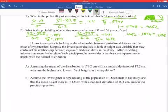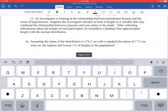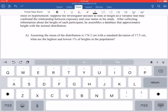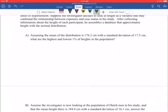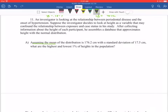This next part, I'm just going to do part A because it's the exact same thing for part B and you can see the answers in the back. So assuming the mean of the distribution. So what this study is, the investigator is looking at the relationship between periodontal disease and the onset of hypertension. Suppose the investigator decides to look at heights as a variable that may confound the relationship between exposure and case studies in his study. After collecting information about the height of each participant, he assembles a database that approximates height with a normal distribution. So assuming the mean of the distribution is 176.2 centimeters with a standard deviation of 17.5 centimeters, what are the highest and lowest one percent of heights in the population?